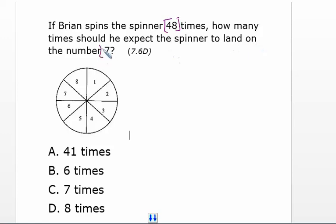Okay, so the first thing that I'm going to do is determine the probability that the spinner will land on the number seven. So there are eight total sections and of these eight sections, only one section represents the number seven.